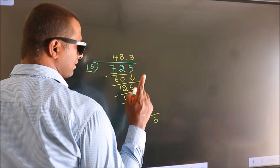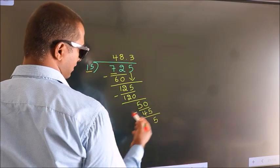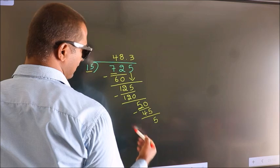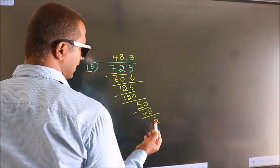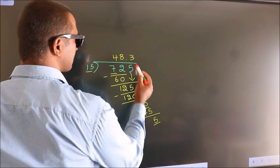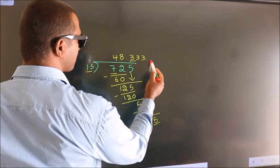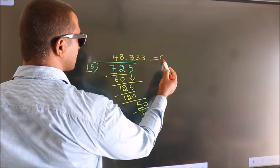Now you observe, here we had 5 and we got 5 again. That means this number will keep on repeating. So this is our quotient.